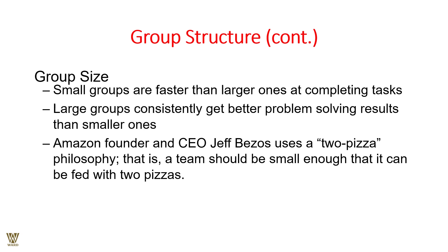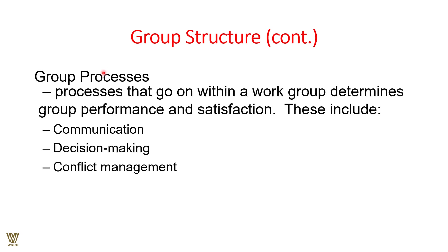Regarding group size: small groups make faster decisions, while large groups consistently get better results in solving problems. Amazon's founder Jeff Bezos uses the 'two-pizza rule' — a team should be small enough to be fed with two pizzas. Group processes — communication, decision making, and conflict management — are what go on within the group and ultimately determine its performance and overall satisfaction.